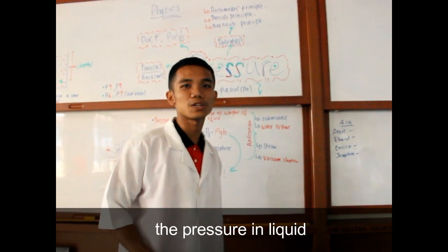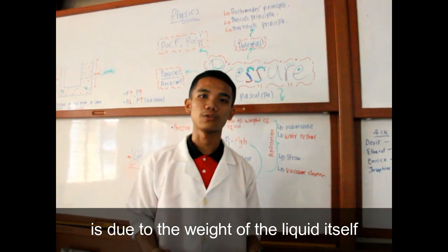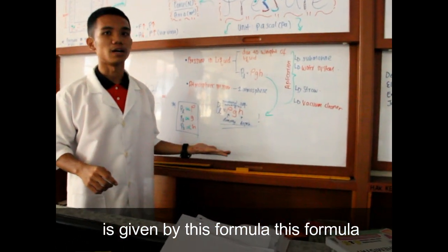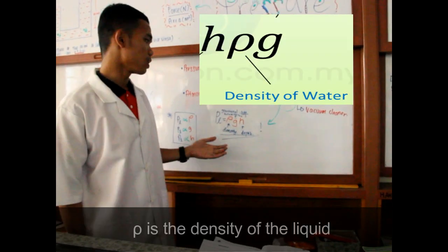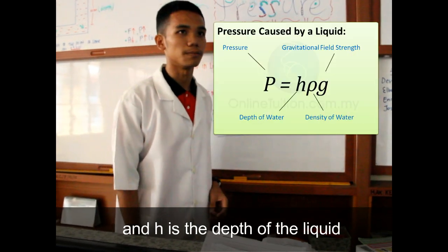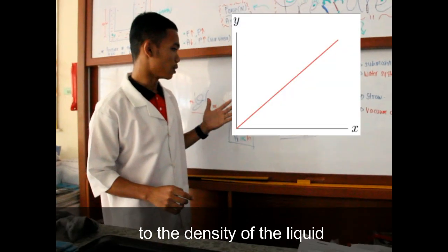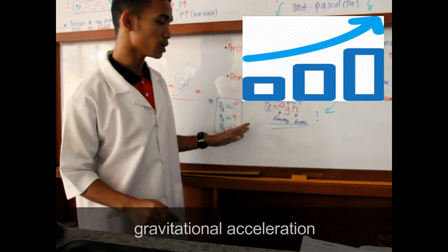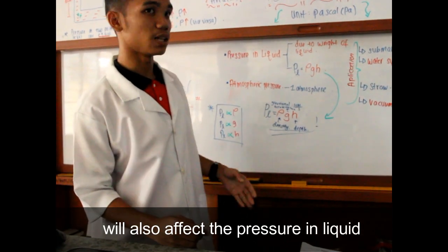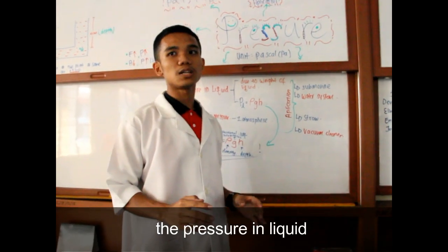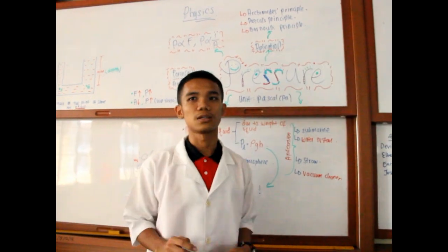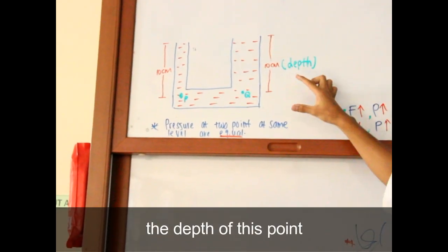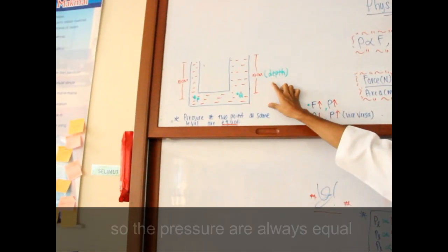Today I will explain about pressure in liquid. Pressure in liquid is due to the weight of the liquid itself, and it acts in all directions. The formula is: P = ρgh, where rho (ρ) is the density of the liquid, g is the gravitational acceleration, and h is the depth of the liquid. Pressure in liquid is directly proportional to density, gravitational acceleration, and depth, and does not depend on the size or shape of the container. The pressure at two points at the same level is equal — for example, at a depth of 10 cm, the pressure is always equal.